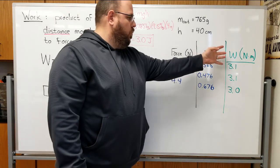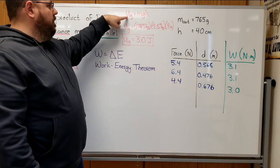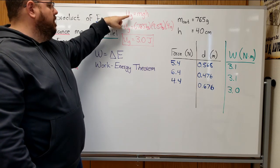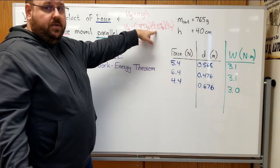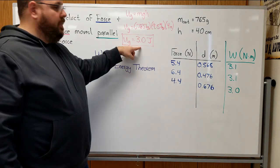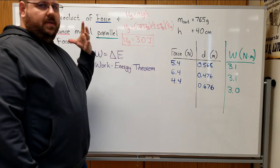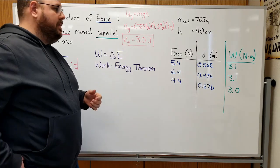If we compare that work done with the energy gained, so if we calculate the potential energy gained by the cart-earth system, multiply mass by g, use 9.8 because we're actually doing a lab in real life here, times the height change of 0.4 meters, I get 3 joules. So there's something special comparing the work to the energy that was gained by the cart-earth system.